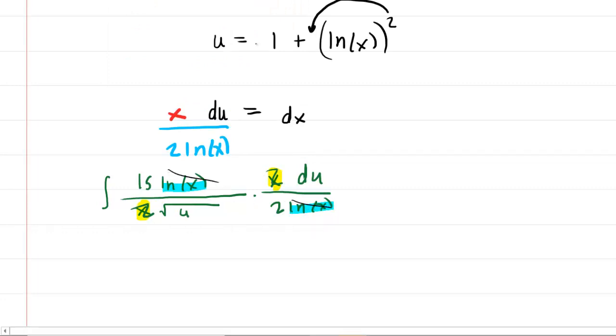You'll be left with a constant of 15 over 2. Let's factor that constant out, so we'll have 15 over 2 times the integral.